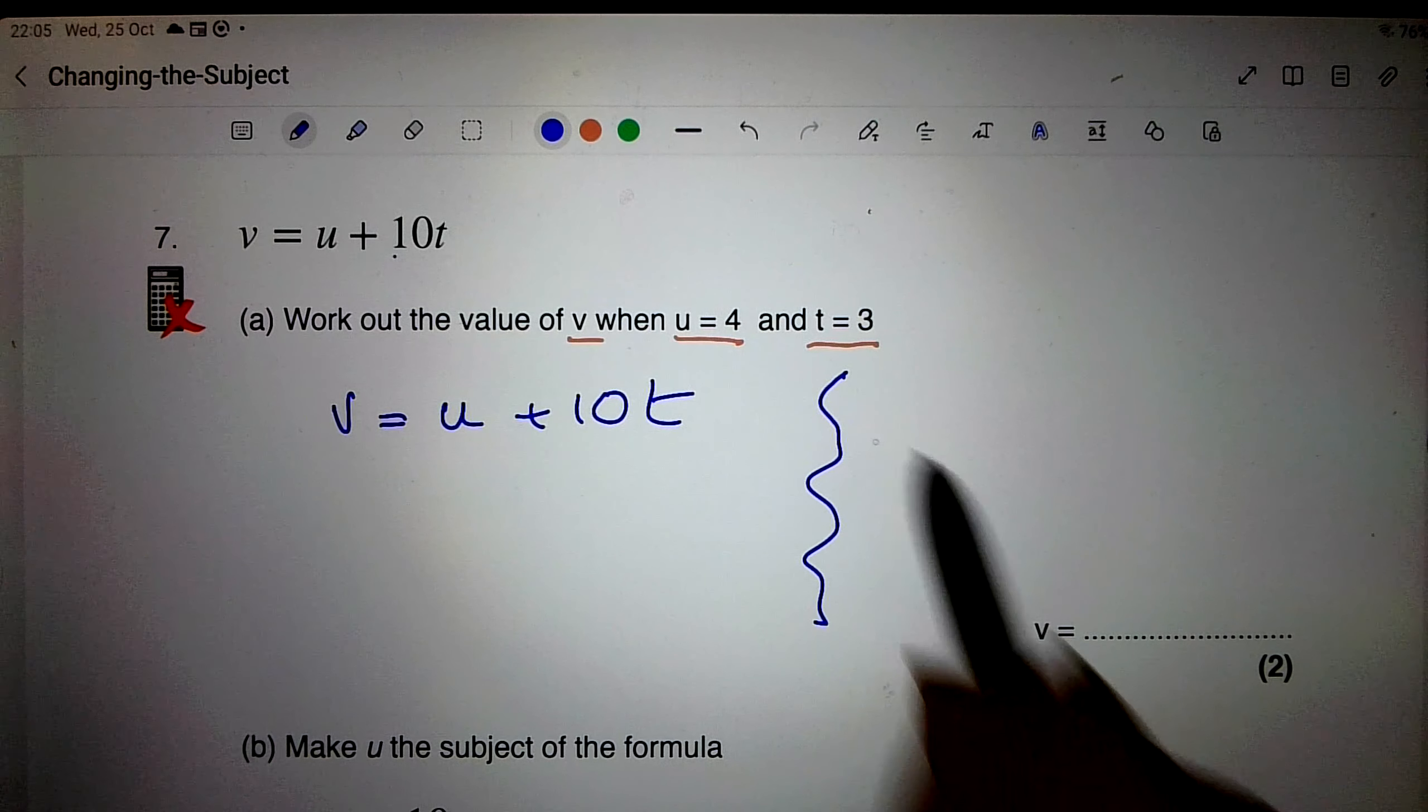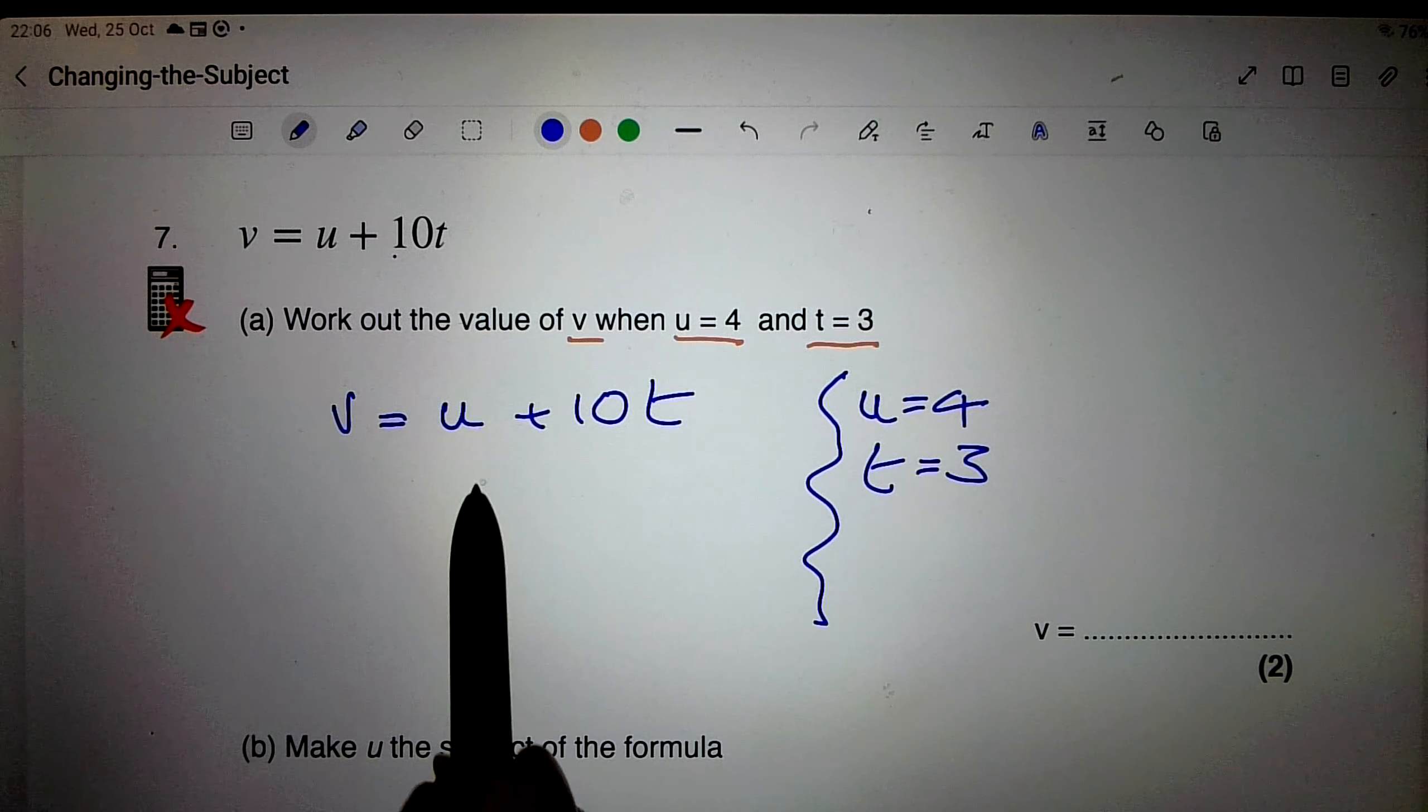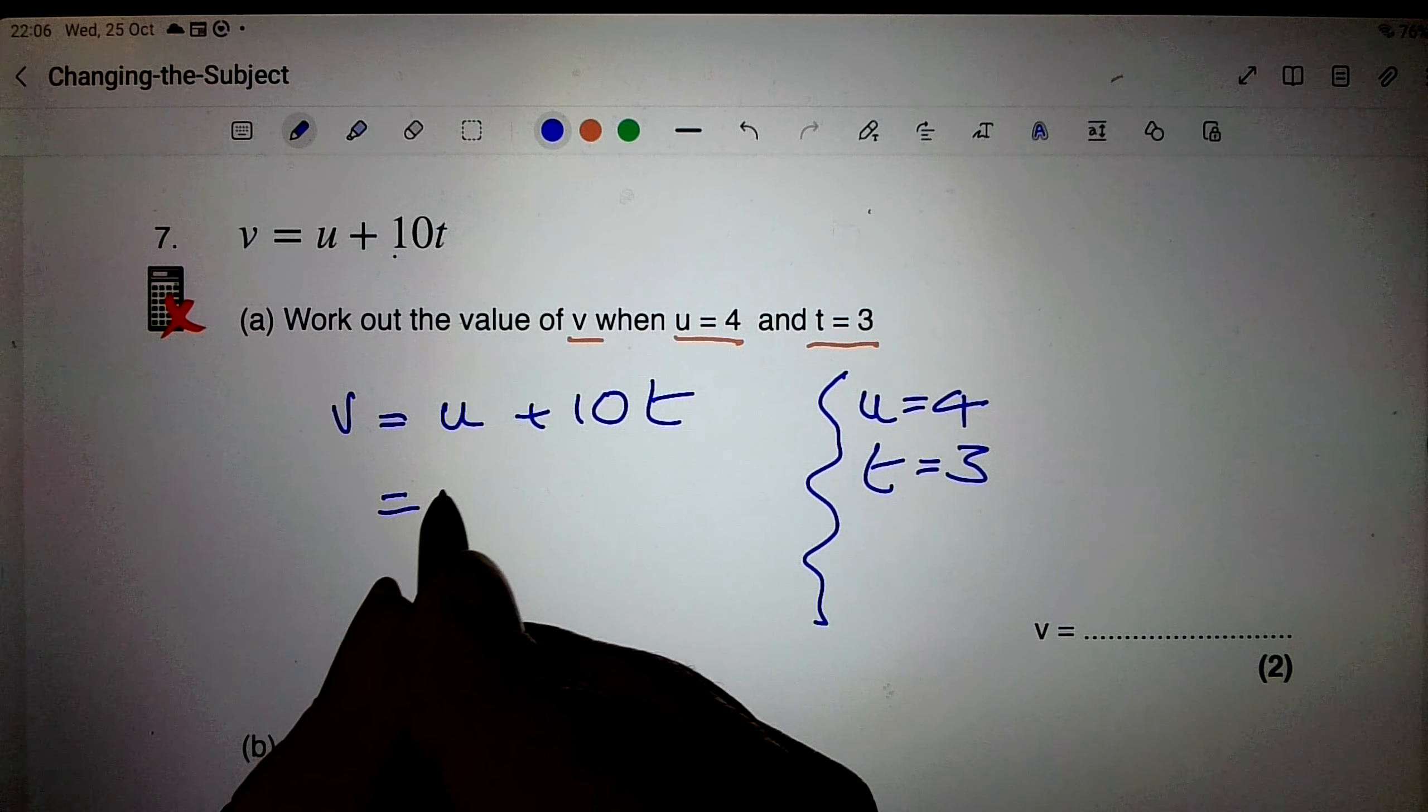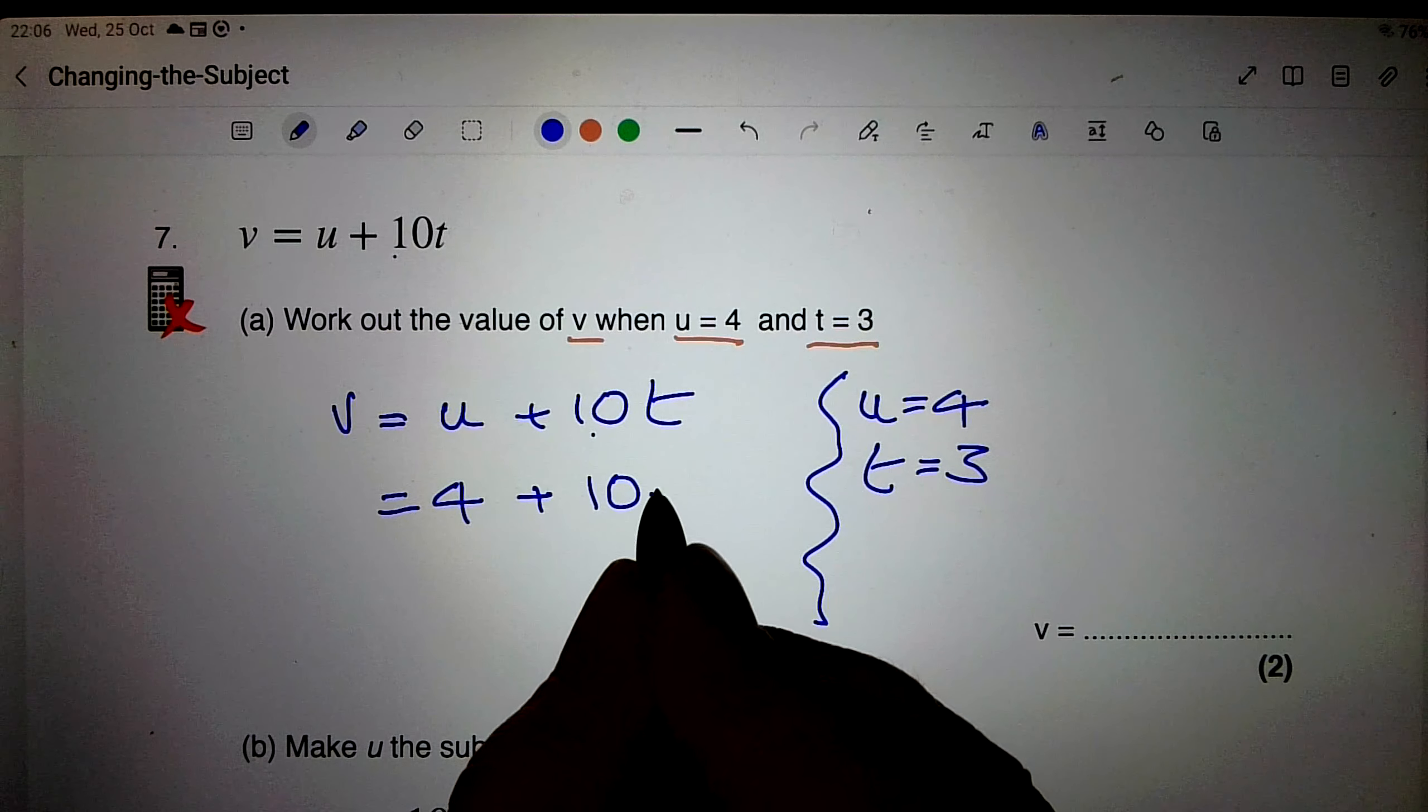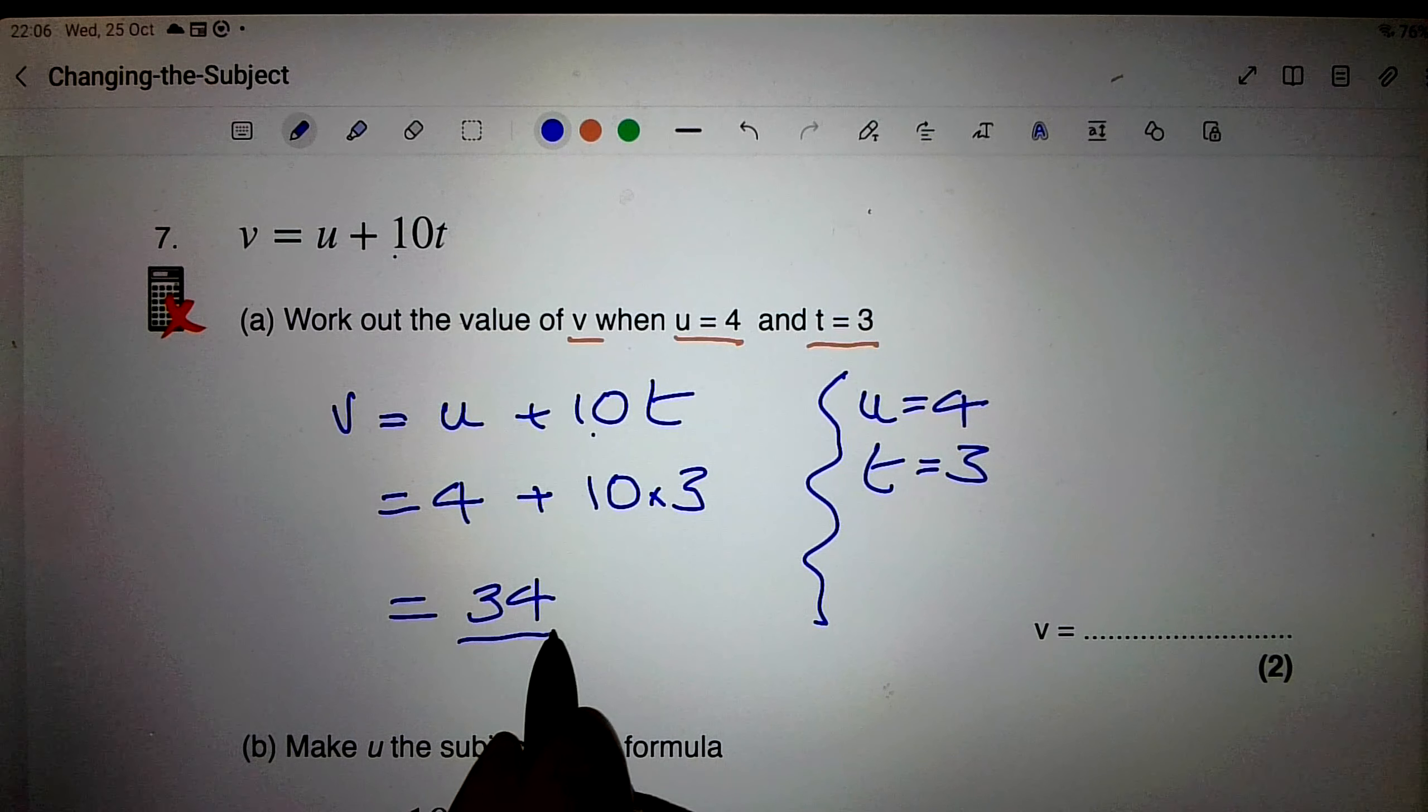Then over on this side, I'm going to write the data. I've got u equals 4 and t equals 3. Now I'm going to put this data into this formula. So v, I'm going to carry the equals sign directly down. U is 4, then I've got a plus sign 10t. That means 10 multiplied by t, so that's 10 multiplied by 3. And you can probably see straight away, that's 4 plus 30, which is 34.